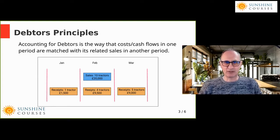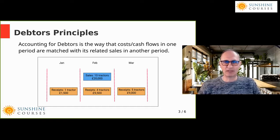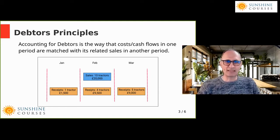We use balance sheet items to match related revenues and costs so we always account for them in the same accounting period. In this example we have transactions in January, February and March for a company that sells tractors and software for managing farming. In February we're selling 10 tractors for £20,000 in total, and the cash is received across different months.